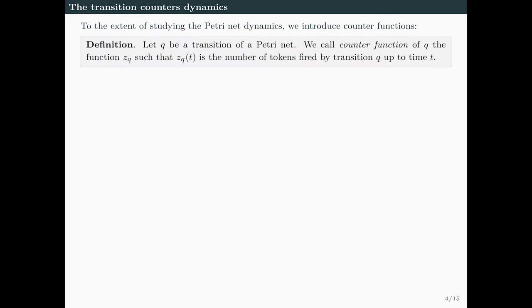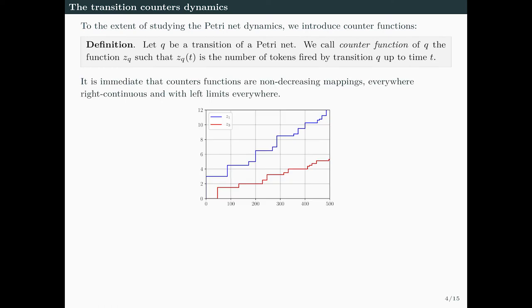Because we want to study the dynamics of Petri nets, we need the following definition. Let Q be a transition of a Petri net. We call counter function of Q the function ZQ such that ZQ(T) is the number of tokens fired by transition Q up to time T. Counter functions are non-decreasing mappings, everywhere right-continuous, and with left limits everywhere. Typically, they are piecewise constant and you get steps whenever tokens are fired.